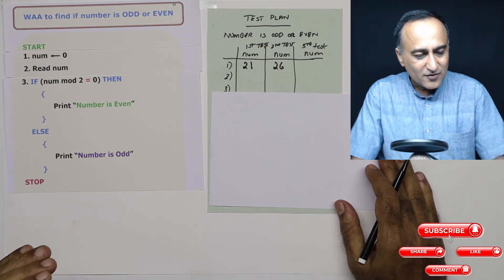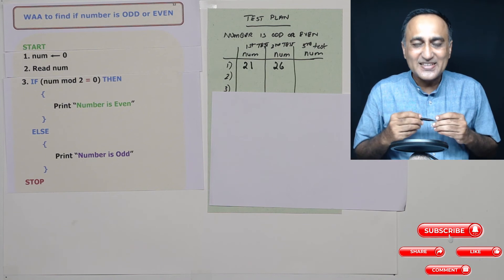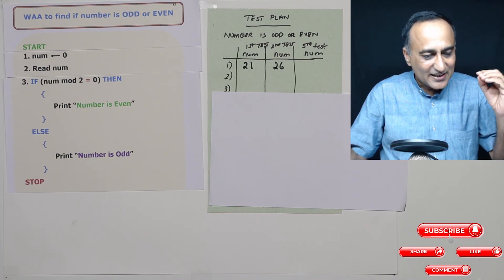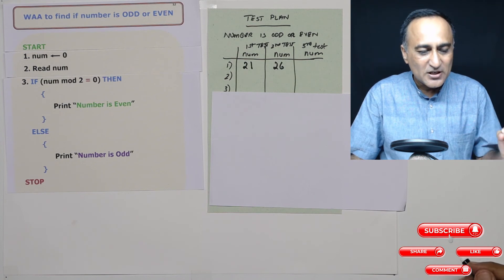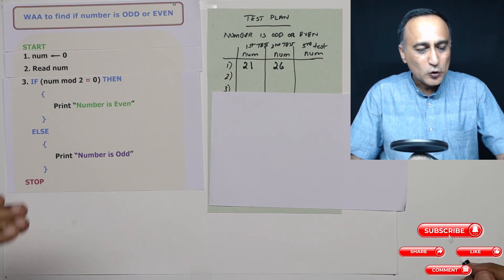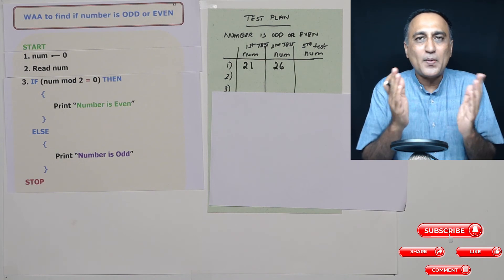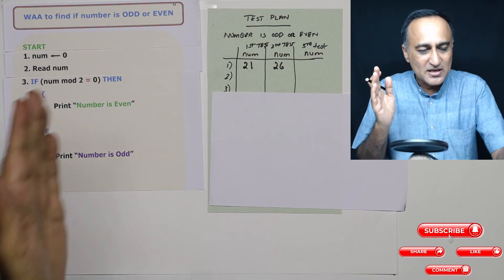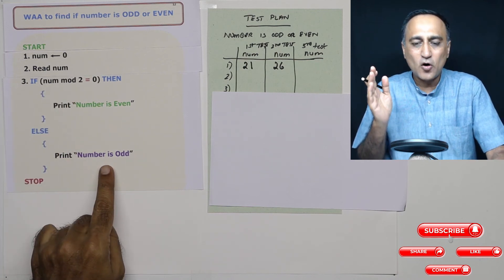So this should give you an idea of the next decision making statement called the if and else. In the if and else, I am using the conditions to make a decision which requires two parts. It can be true or it can be false. If it is true, I am saying even if it is false, I am saying odd.